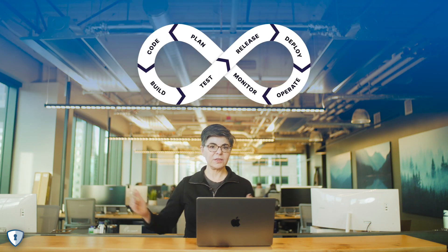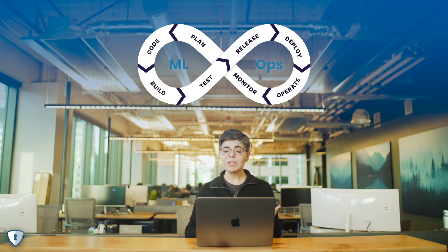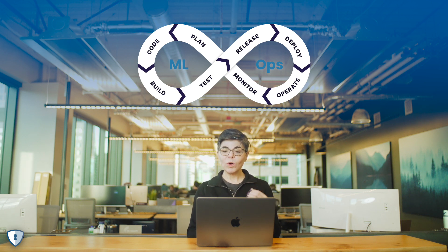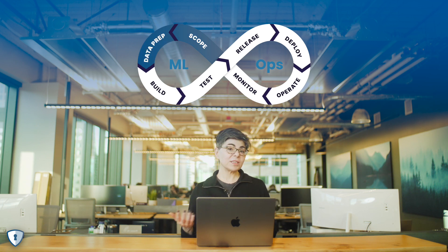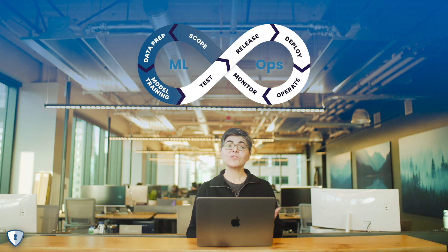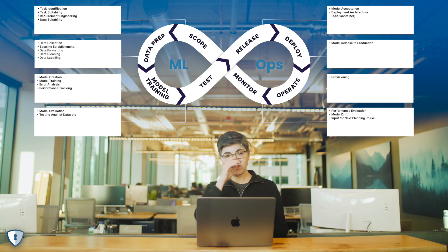To get from DevSecOps to MLSecOps, we first have to think about MLOps itself. The deployment and operation parts of MLOps are very similar to DevOps since it's still software running in your organization, but the beginning of the lifecycle looks significantly different. The planning phase becomes a scoping phase, followed by data engineering and preparation, and instead of building code, you're training models.